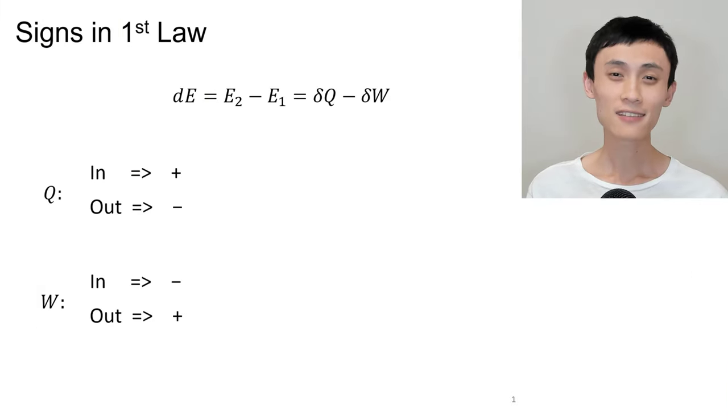As we said last time, we derived the first law, which is DE equals DQ minus DW. E is energy, Q is heat transfer, and W is work. Q and W are not state properties. They are path dependent. Energy is a state property. You can find that out by looking up the property table.